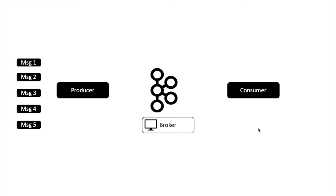Producer will send some data to Kafka. Kafka will store that data on the broker. Whenever consumer wants to consume it, they will request from Kafka broker to give them the data. Then Kafka broker will give that data to the consumer for any kind of processing. I hope this flow is clear.